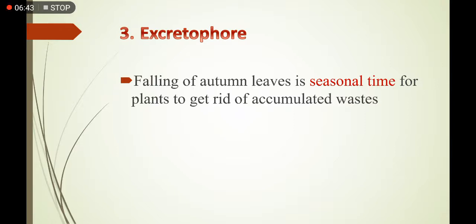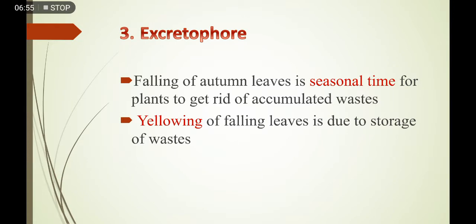تمام پودے اپنے پتوں کو خزاں کے موسم میں گرا دیتے ہیں — ایسی صورت میں plants اپنی body کے اندر پورے season میں ذخیرہ شدہ waste کو ضائع کرتے ہیں۔ گرنے والے پتے yellow ہو جاتے ہیں کیونکہ pigmented waste compounds ہلکے رنگ کے chlorophyll کے color کو چھپا دیتے ہیں۔